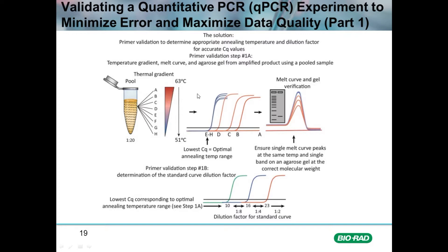The data from a thermal gradient looks like what we see here, where at the highest temperature there may be no amplification curve at all because the primers are not annealing at 63 degrees. As the temperature decreases going down the column from A to H, the curves come up at lower and lower cycles until they converge at the lowest cycle threshold — the most efficient annealing temperature range. In this case, the primers anneal at a lower temperature, perhaps between 51 and 55 degrees.